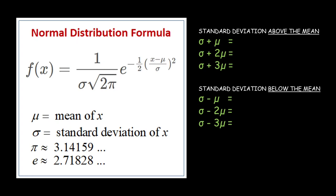In standard deviation, we have above the mean and below the mean. Above the mean uses the addition sign, while below the mean uses the subtraction sign. In standard deviation, we are only going to use 3 sets of scores: 1, 2, and 3.